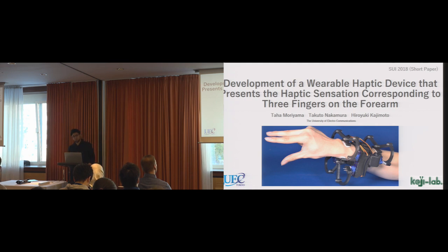I would like to introduce the development of a wearable haptic device that presents haptic sensation corresponding to three fingers on the forearm. As you can see in this figure, this is our device which I've made. It has three links on the wrist which can move left, right, up and down. This deforms the skin on the forearm which tries to reproduce the haptic sensation of the fingertip to the forearm.